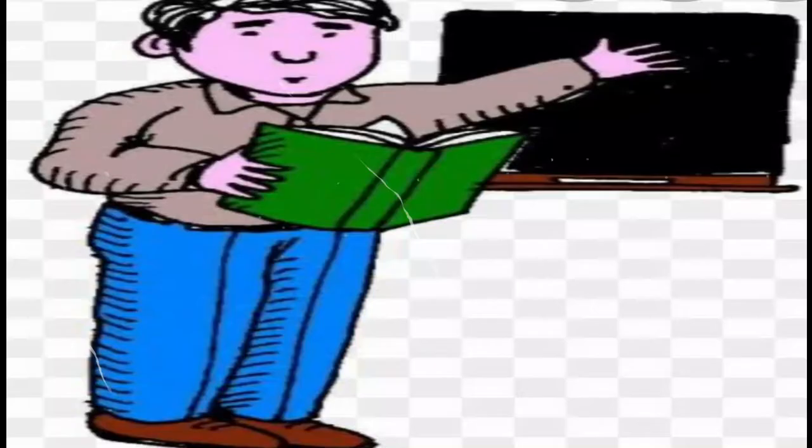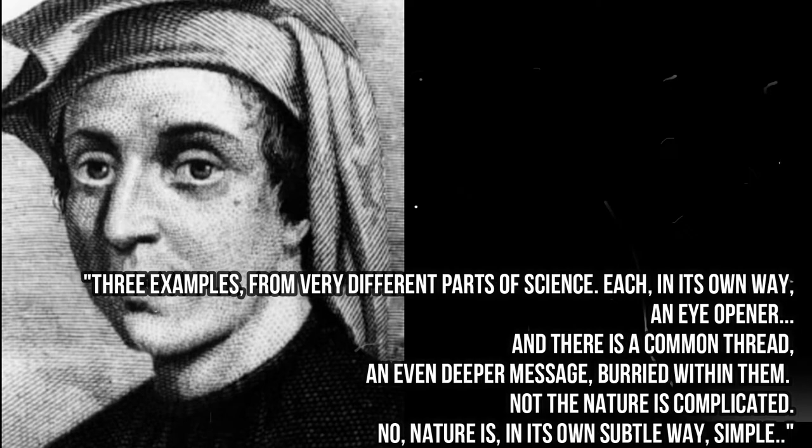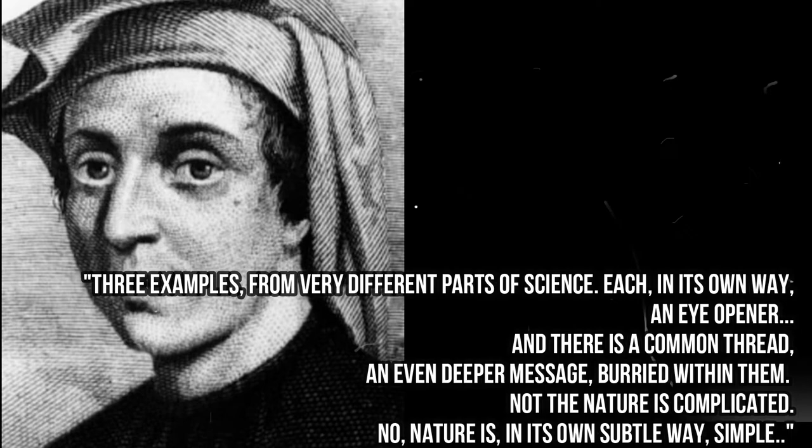To conclude, here's what the author said on page 142: 'Three examples from very different parts of science, each in its own way an eye-opener, and there is a common thread — an even deeper message buried within them. Not that nature is complicated — no, nature is, in its own subtle way, simple.' He also added that those simplicities do not present themselves to us directly. Instead, nature leaves clues for the mathematical detectives to puzzle over. When we look closer, that's where chaos within simplicity can be found. Fascinating, right?